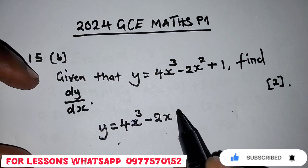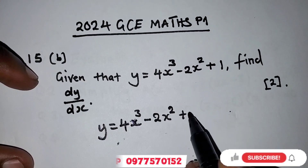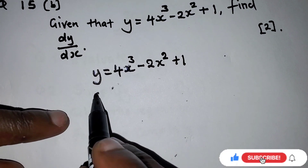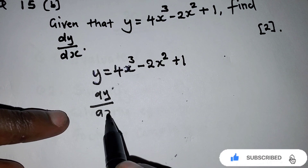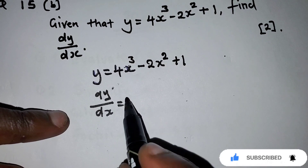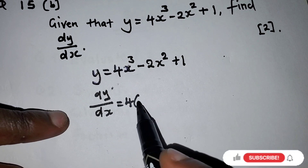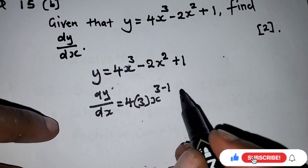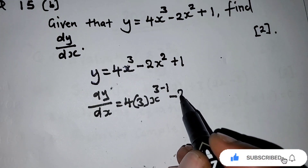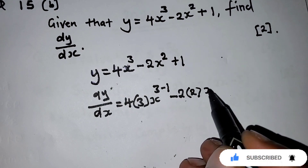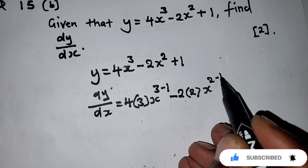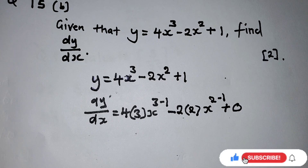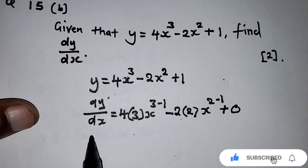So y equals 4x³ minus 2x² plus 1. To find dy/dx, you multiply the coefficient by the power, then the power reduces by 1. The same applies here — it will be negative 2 times the power, which is 2, then the power reduces by 1. The dy/dx of a constant number is 0 — that is what you should know.